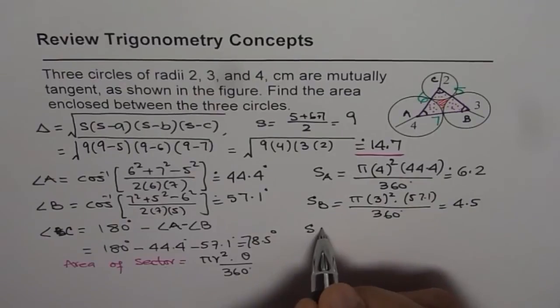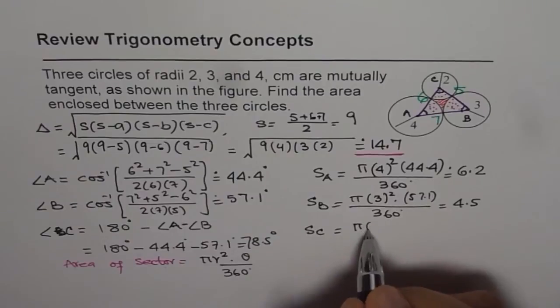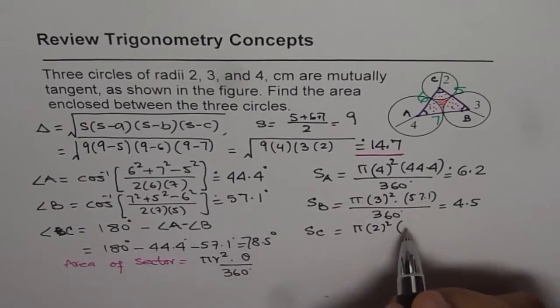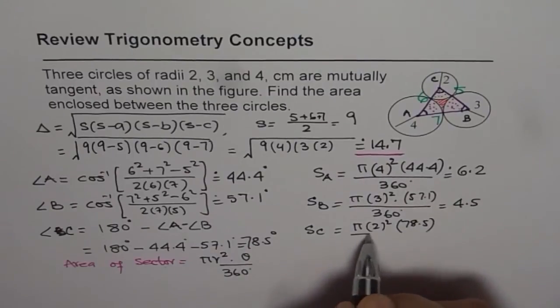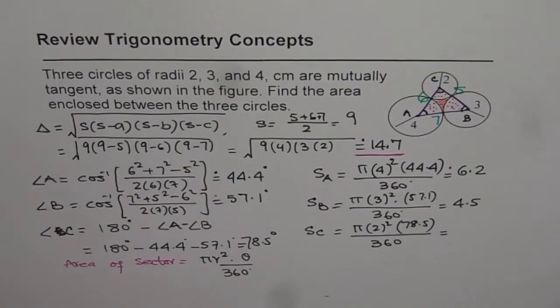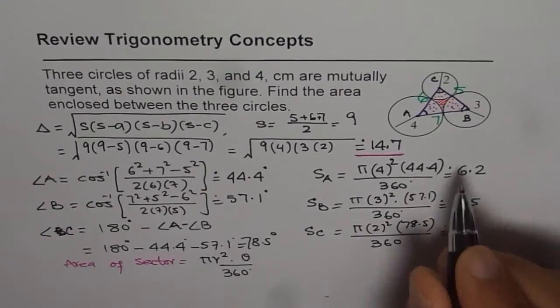And for sector C, it is of radius 2. So we can write this as pi times 2 square and the angle for C is 78.5 divided by 360. And that gives us pi times 4 times 78.5 divided by 360 equals to 2.74. So we got area of the sectors.